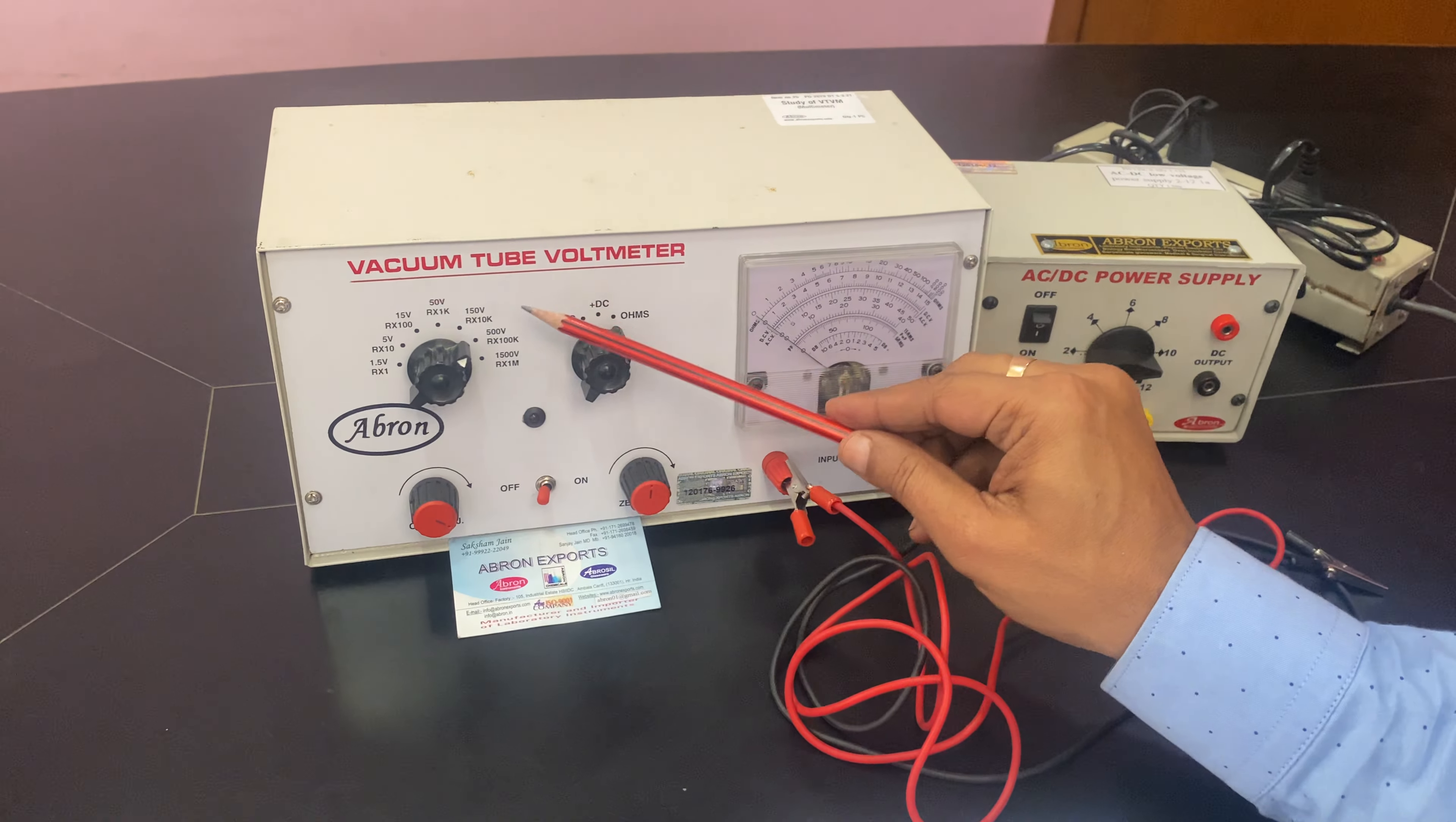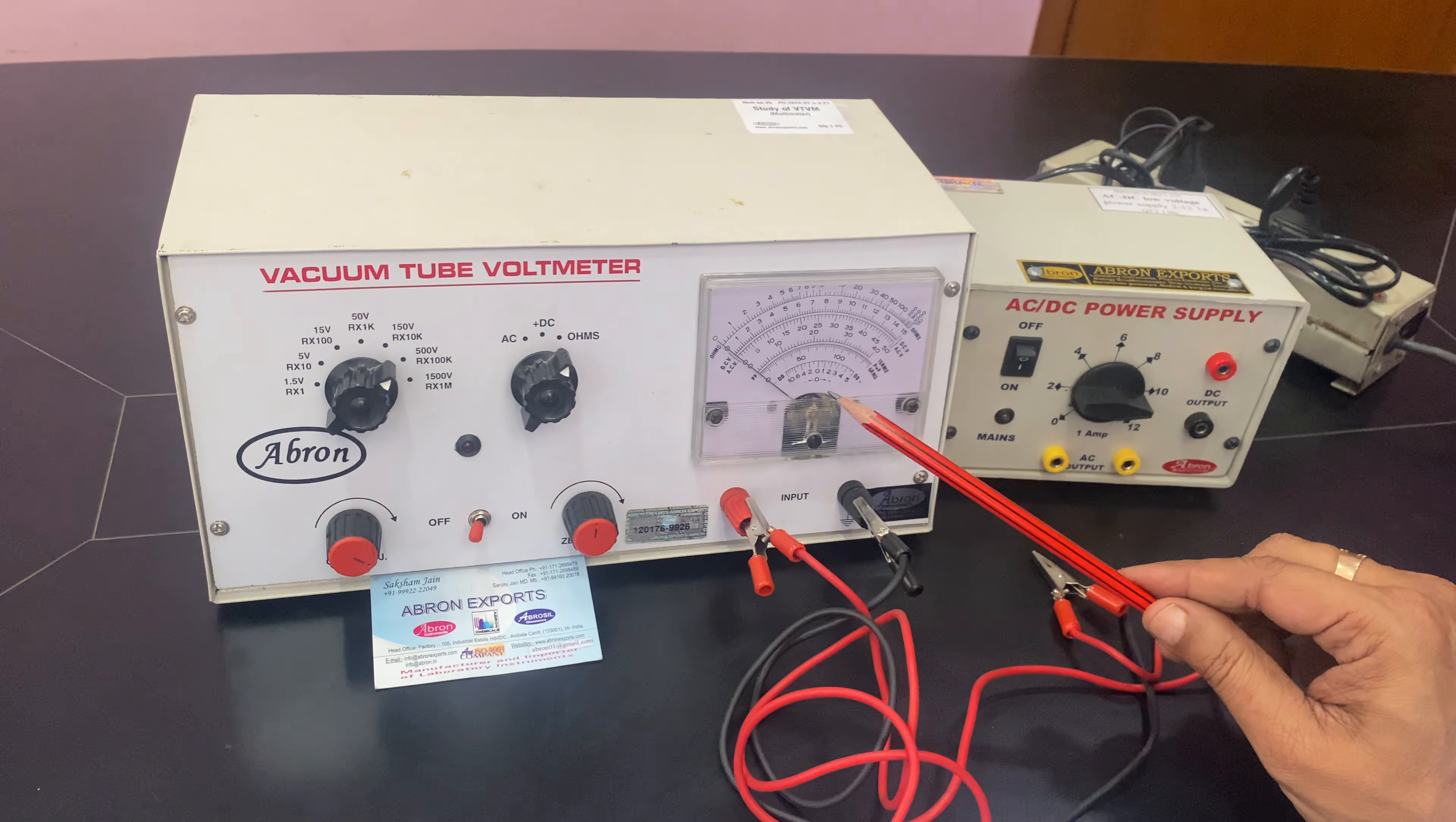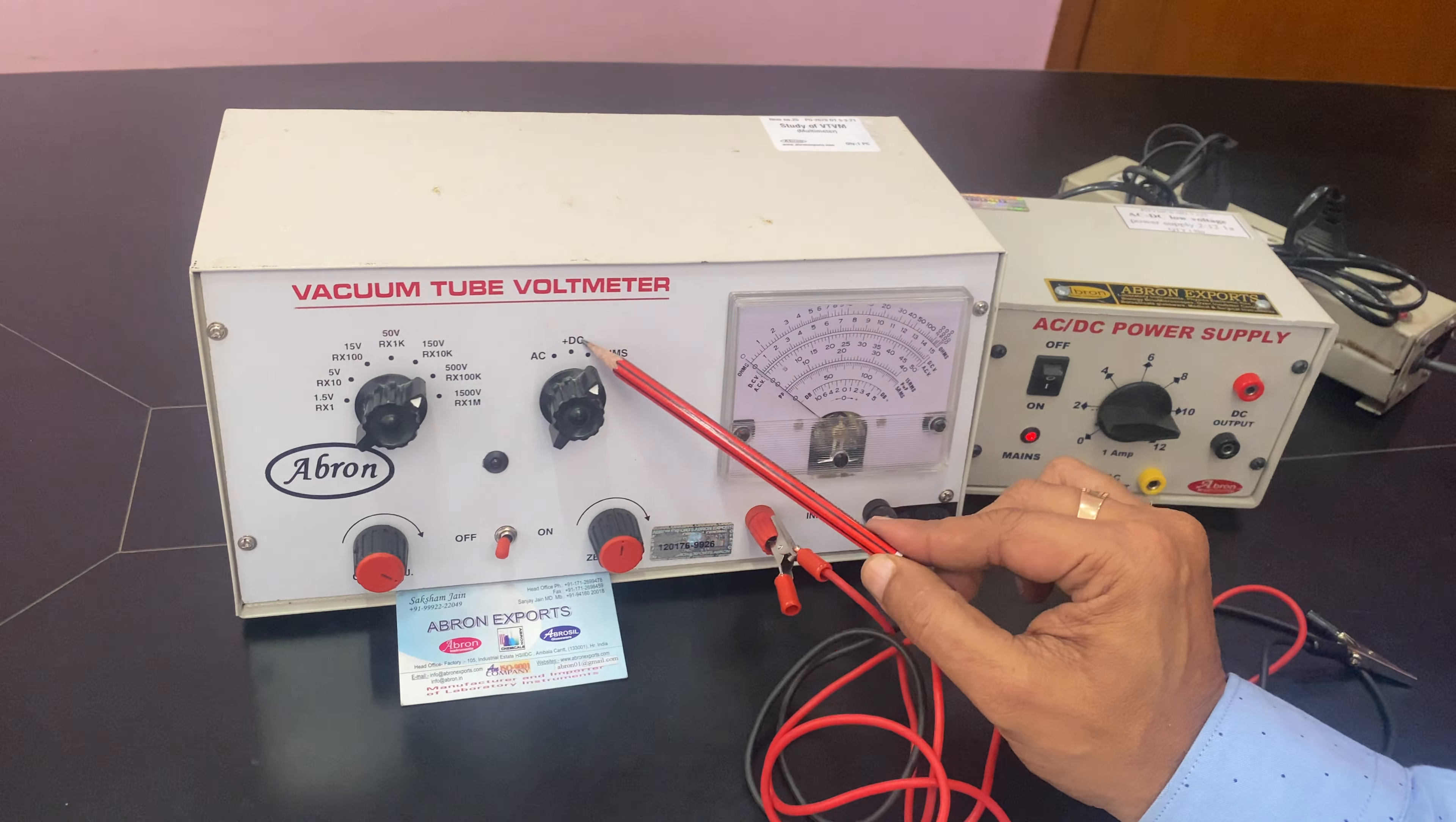This is a vacuum tube voltmeter, generally called VTVM, a very special instrument with a special meter inside and circuit. It's a substitute for a multimeter. You can measure ohms up to 1M times 10, DC voltage up to 1500 volts, and AC voltage up to 1500 volts.